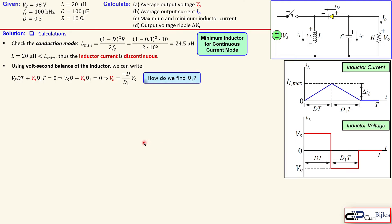To find d1, we need to carry out another analysis. First, let's designate the source current shown here in pink. The source current is equal to the inductor current when the switch is closed — that is the charging part shown in pink. When the switch opens, there is no more inductor current flowing from the source, so the source current goes down and remains zero for the rest of the period.